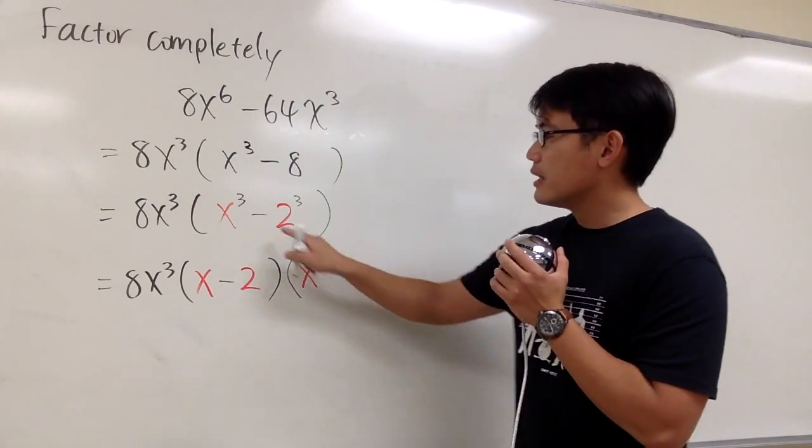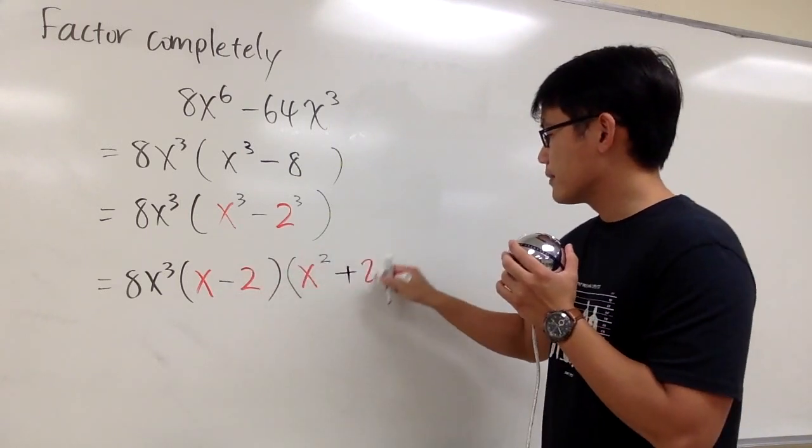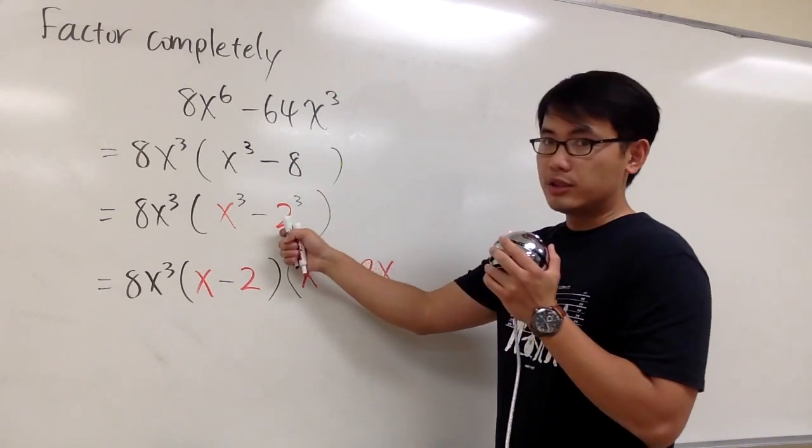And then we add this times that, which is 2 times x, 2x. And you see that, we are always going to add, and then this right here is just a 2 in red.